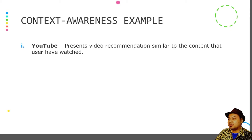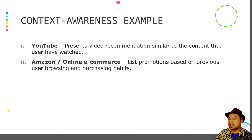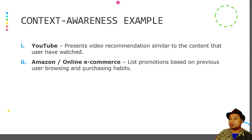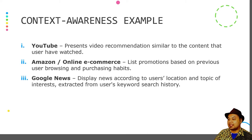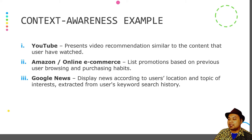Here are some context awareness examples. YouTube can present video recommendations similar to content the user or similar users have watched. Amazon and other e-commerce platforms such as Shopee or Lazada list promotions and discounts based on previous browsing history and purchasing habits. Google News displays news according to the user's location and topic of interest, extracted from keyword and search history, delivering the most up-to-date and relevant news of interest to the user.